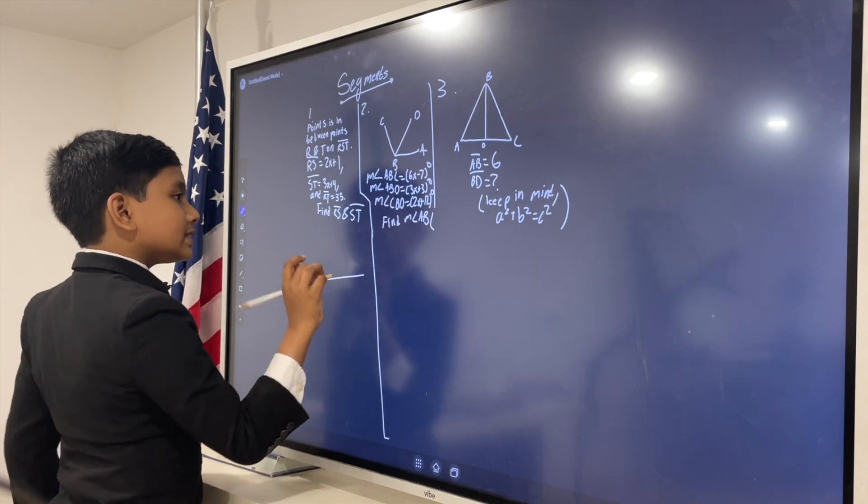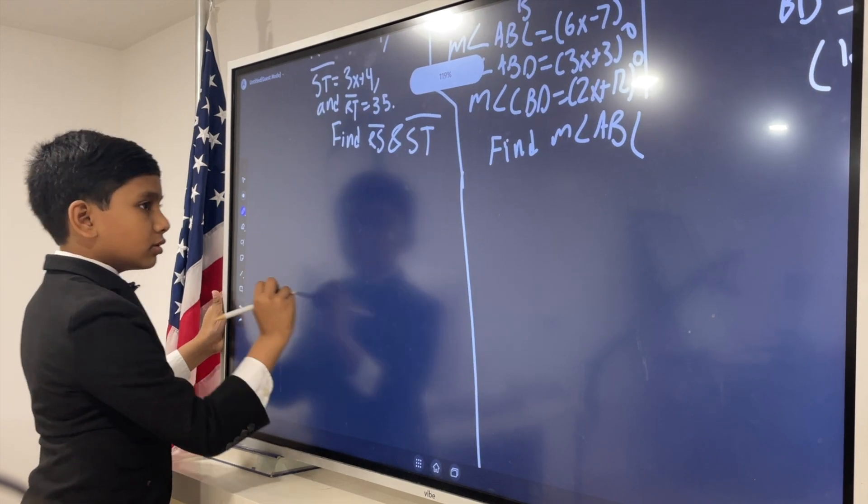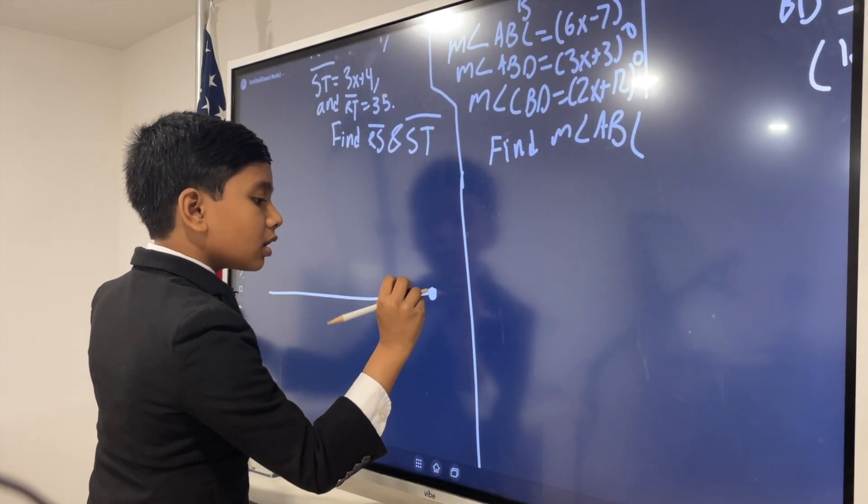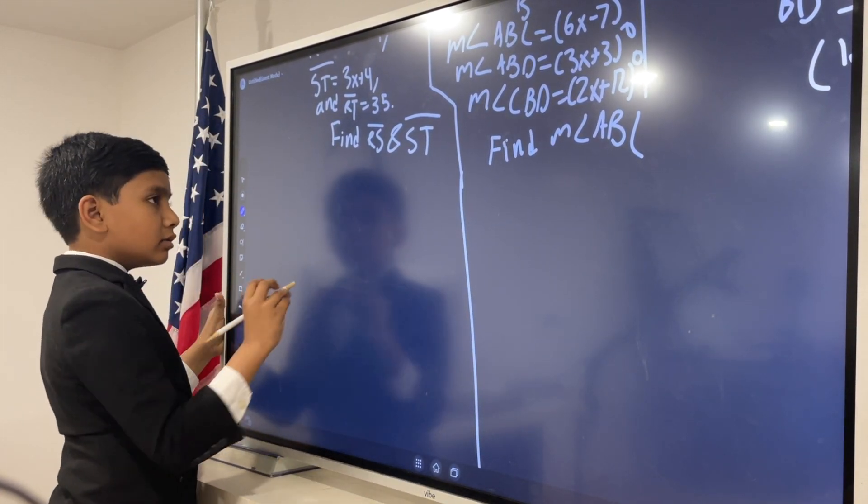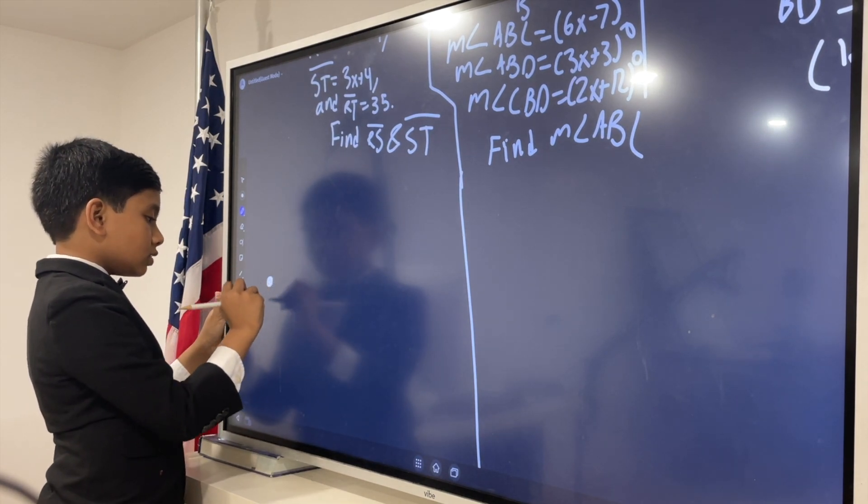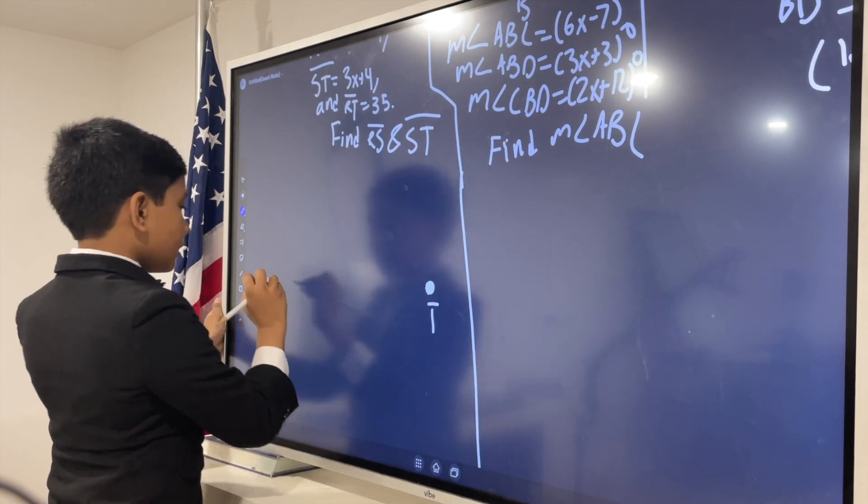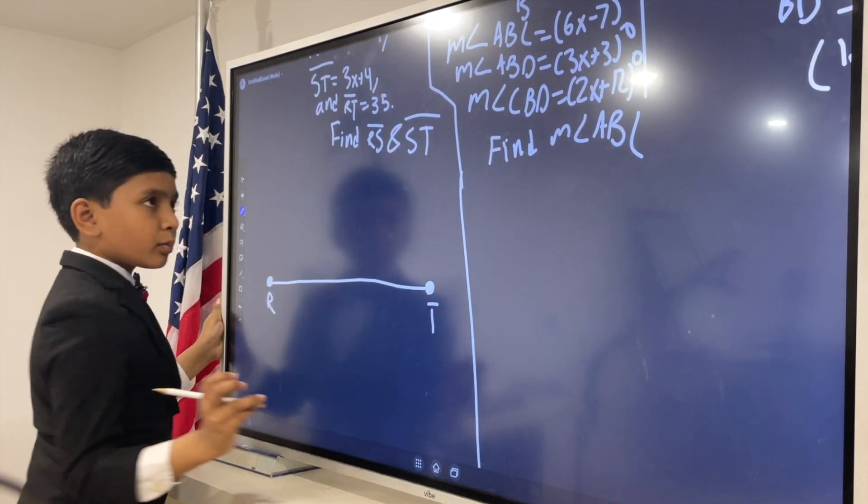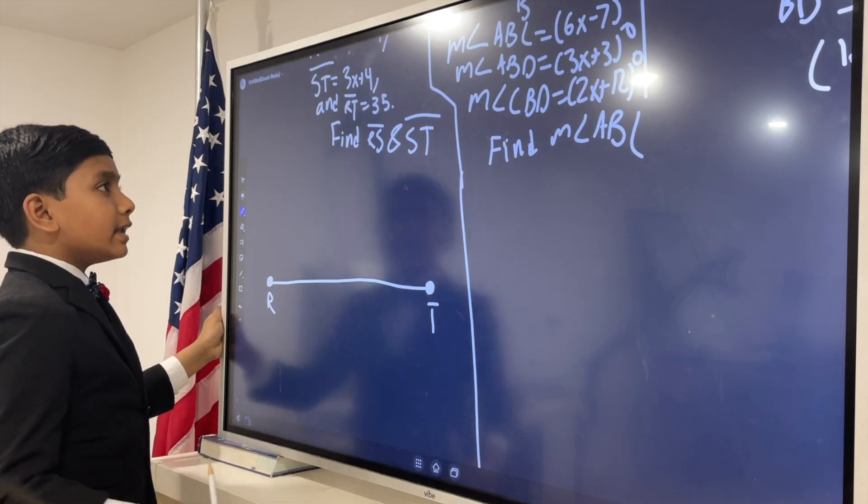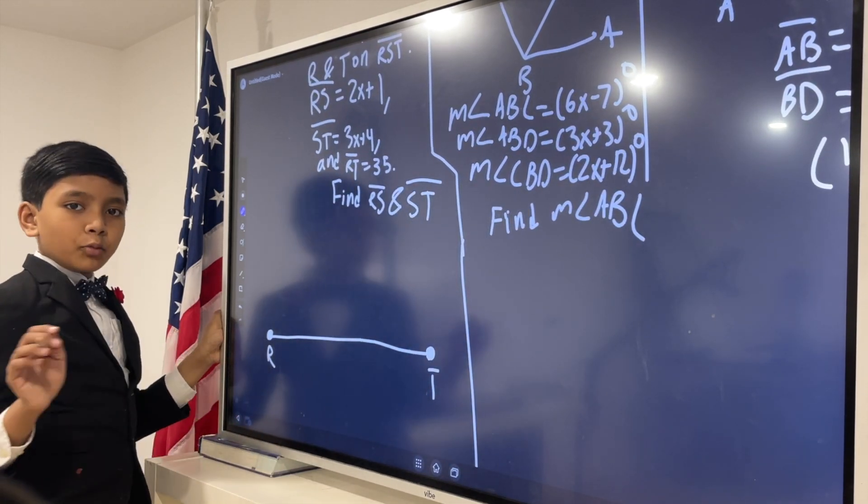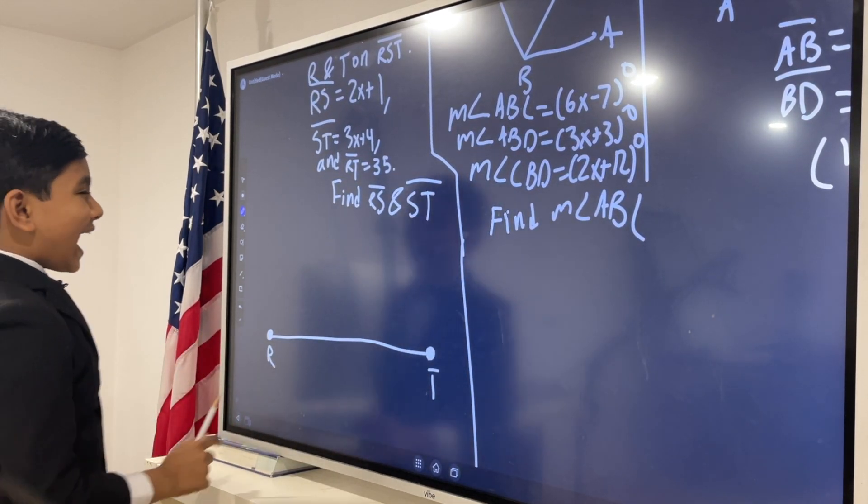First of all, let's sketch our line. Actually, we should sketch our points first. So, we have R and T, and then we connect them with our bridge. And now, there is a little checkpoint in the middle of the bridge, S.